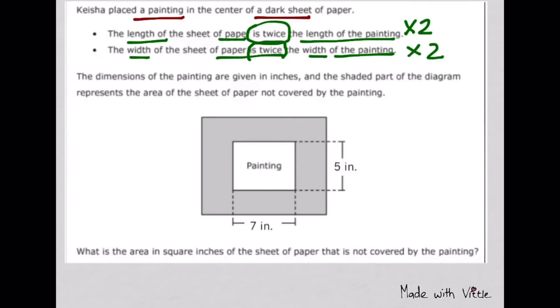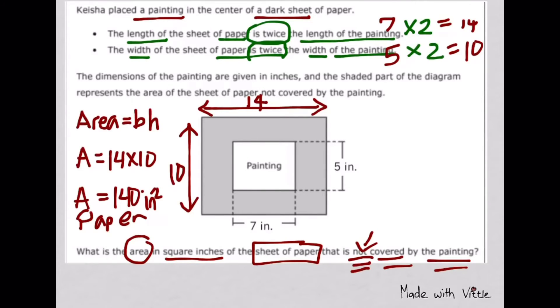Keisha placed the painting in the center of a dark sheet of paper. The length of the sheet of paper is twice the length of the painting - twice means times 2. The width of the sheet of paper is twice the width of the painting, so that also means times 2 of the width. The question is, what is the area in square inches of the paper that is not covered by the painting?